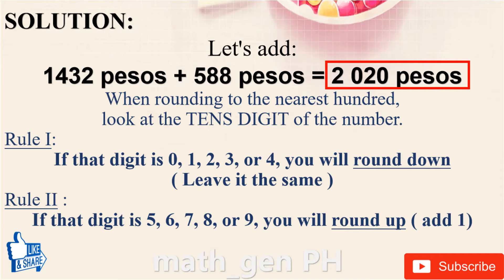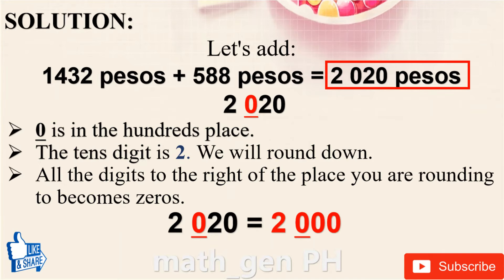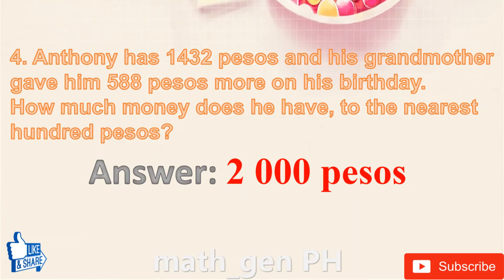Solution: 1,432 + 588 = 2,020 pesos. When rounding to the nearest hundred, look at the tens digit. Rule: if that digit is 0–4, round down; if it is 5–9, round up. In 2,020, the tens digit is 2, so we round down. All digits to the right of the hundreds place become zeros. 2,020 becomes 2,000. Answer: 2,000 pesos.